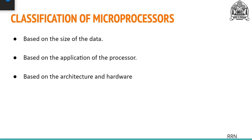The second classification is based on the application of the processor — where it is used. There are two types: general purpose microprocessors, which can be used for any application and can be programmed or modified according to the task; and special purpose microprocessors, which are designed to handle specific functions required for an application, such as digital signal processors and application-specific ICs.